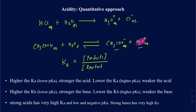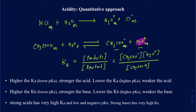Remember, the equilibrium constant expression is always the concentrations of products over the concentrations of reactants. In this case your products are CH3COO- and H3O+, and your reactant is CH3COOH. As you learned in General Chemistry, if anything is a liquid or solid you don't include it in the equilibrium expression, because there is so much of it that it acts like a solvent.